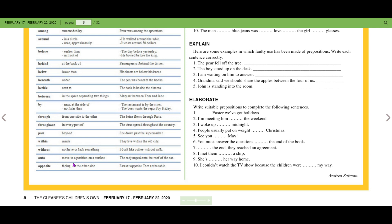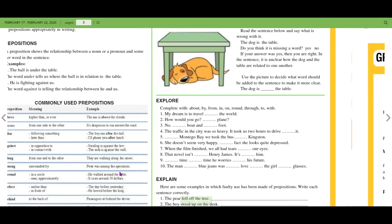Onto: to move to a position or surface - the cat jumped onto the roof of the car. Opposite: facing, on the other side - Eva sat opposite Tom at the table.